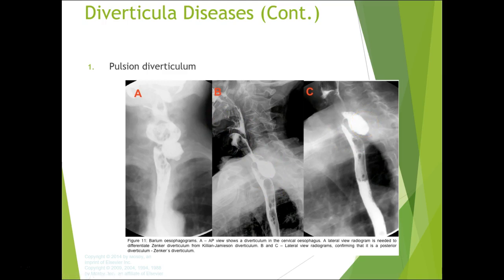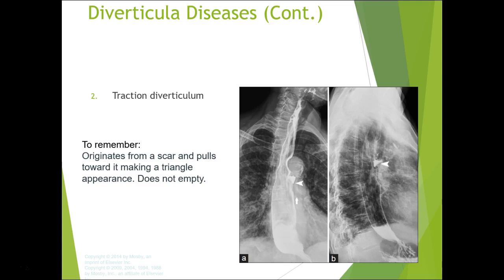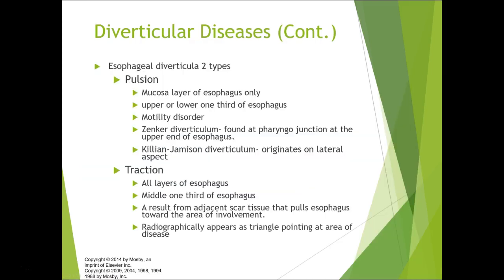Traction diverticulum originates from scar tissue that pulls toward it, creating a triangle appearance. There are two types of esophageal diverticula: pulsion involves only the mucosal layer at the upper and lower one-third due to a motility disorder — including Zenker's at the pharyngeal junction and Killian-Jamieson originating on the lateral aspect. Traction involves all esophageal layers in the middle third from adjacent scar tissue, appearing as a triangle.